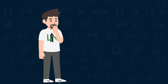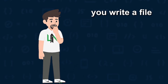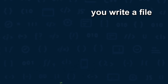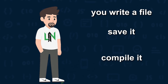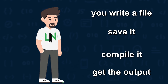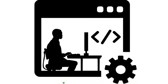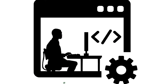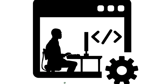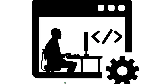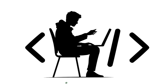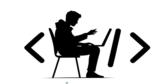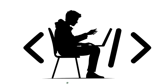In 99% of languages, you write a file, save it, compile it, and get the output. But in Unison, code is not a file at all. Code is stored as a hashed entity — content-addressed, like git, but much deeper.